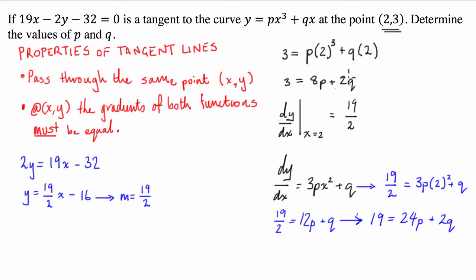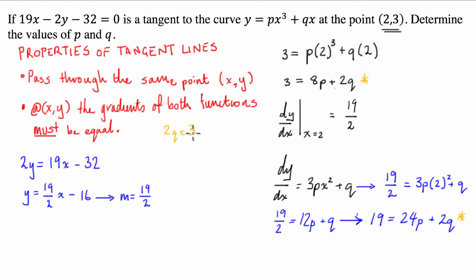Now we have two equations with two unknowns and can use simultaneous equations to solve them. Rearranging both equations in terms of 2q: from the first equation, 2q equals 3 minus 8p; from the second equation, 2q equals 19 minus 24p.